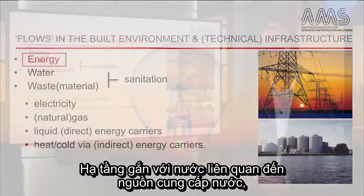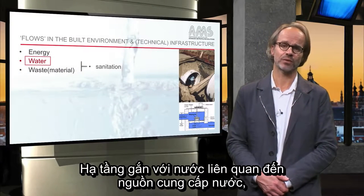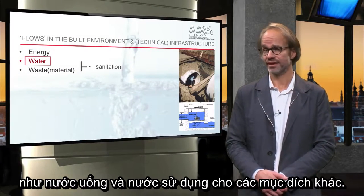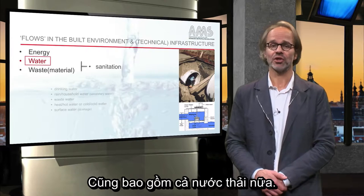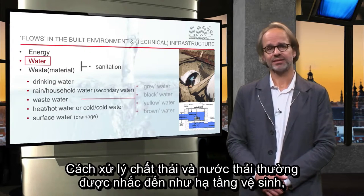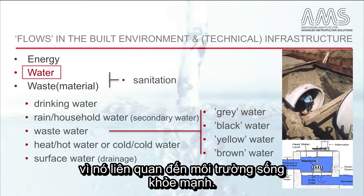The water-related infrastructure concerns supply-related water flows like drinking water and secondary water, but also wastewater. Waste and wastewater are often referred to as the sanitation infrastructure, as they are literally connected to the healthy living environment.